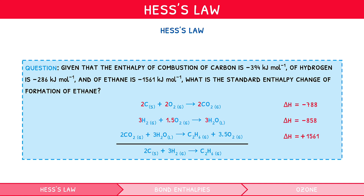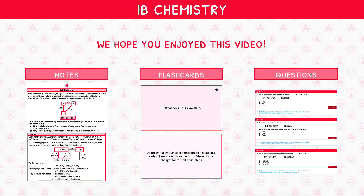To find the enthalpy of formation, simply add the values of delta H for each equation used after flipping or multiplying: (−788) + (−858) + 1561 = −85 kJ/mol. You can now find enthalpy change in most situations. But what about bond enthalpies? You've now reached the end of the preview for this IB science video. If you want to check out the full video, head over to our website and select a membership plan today.